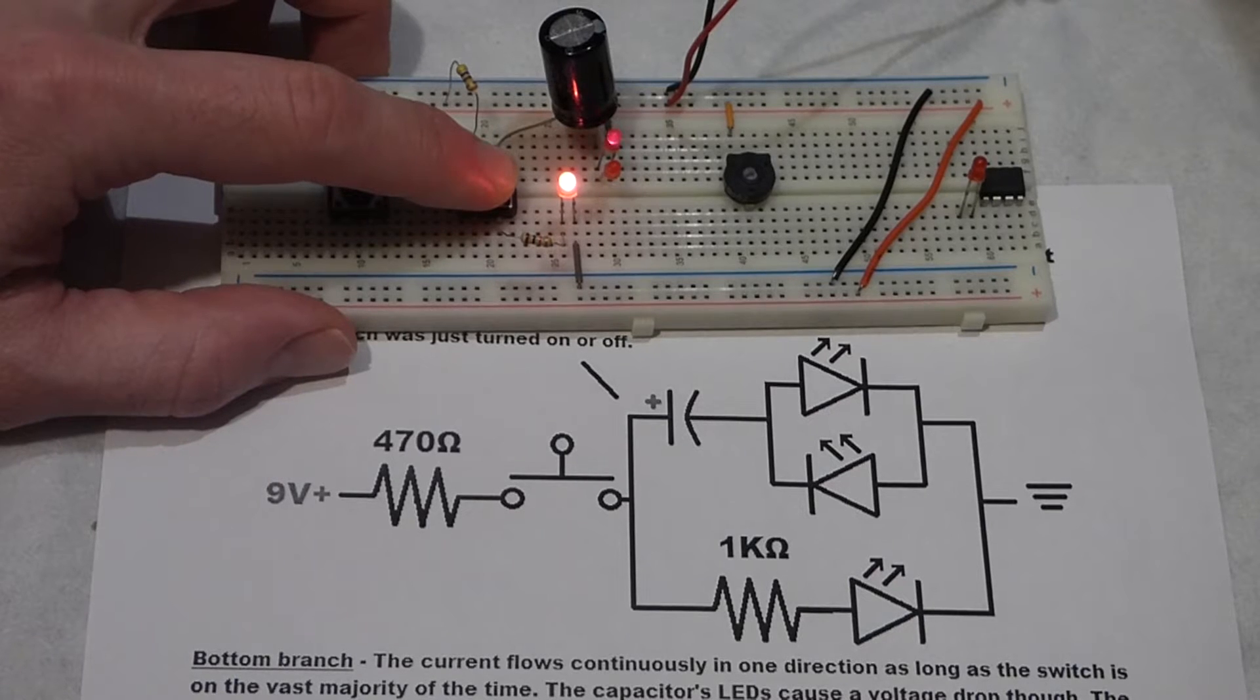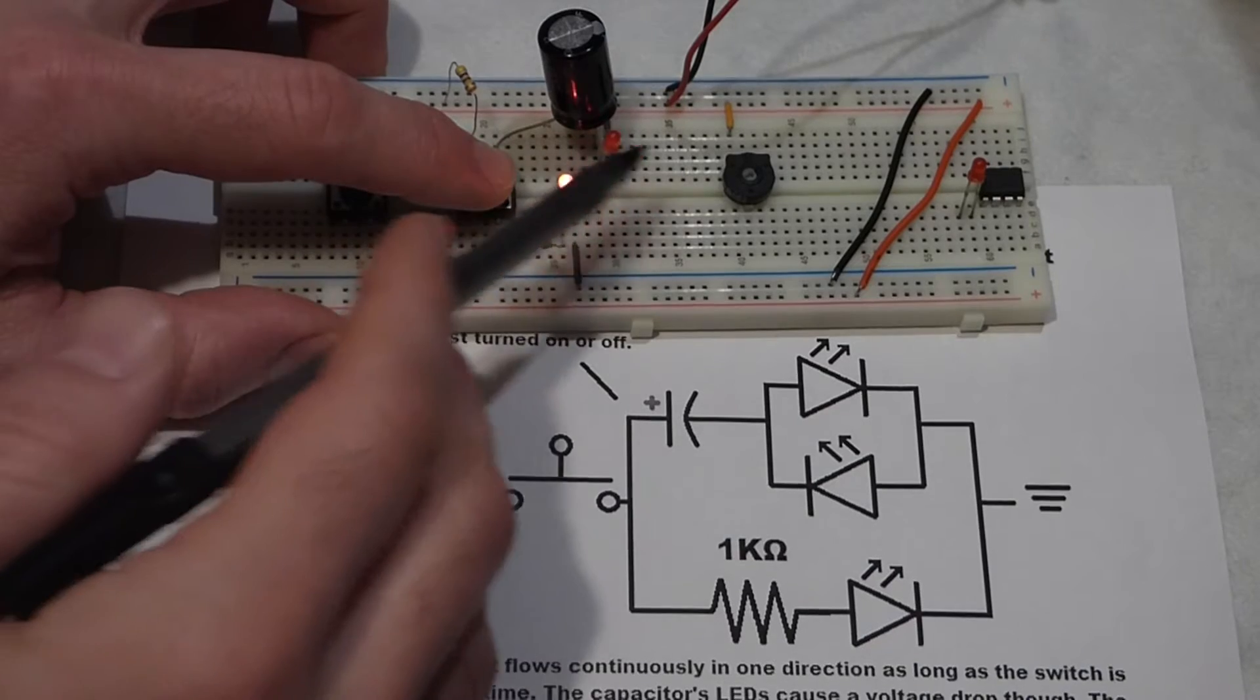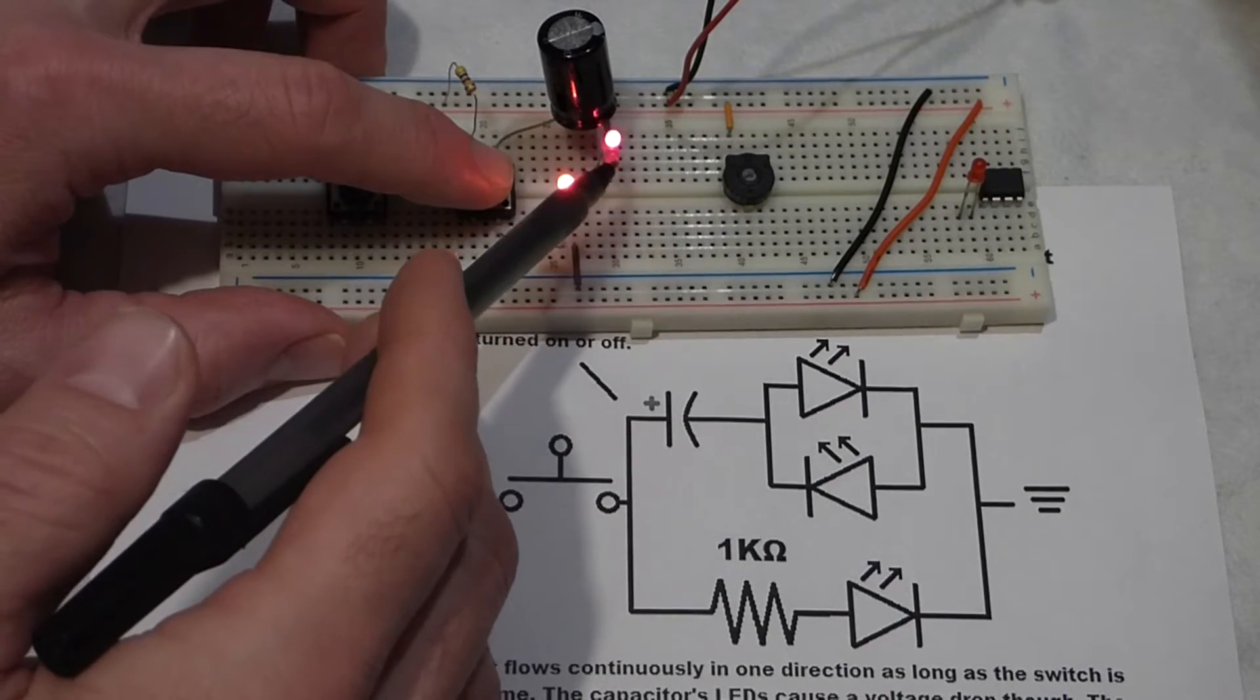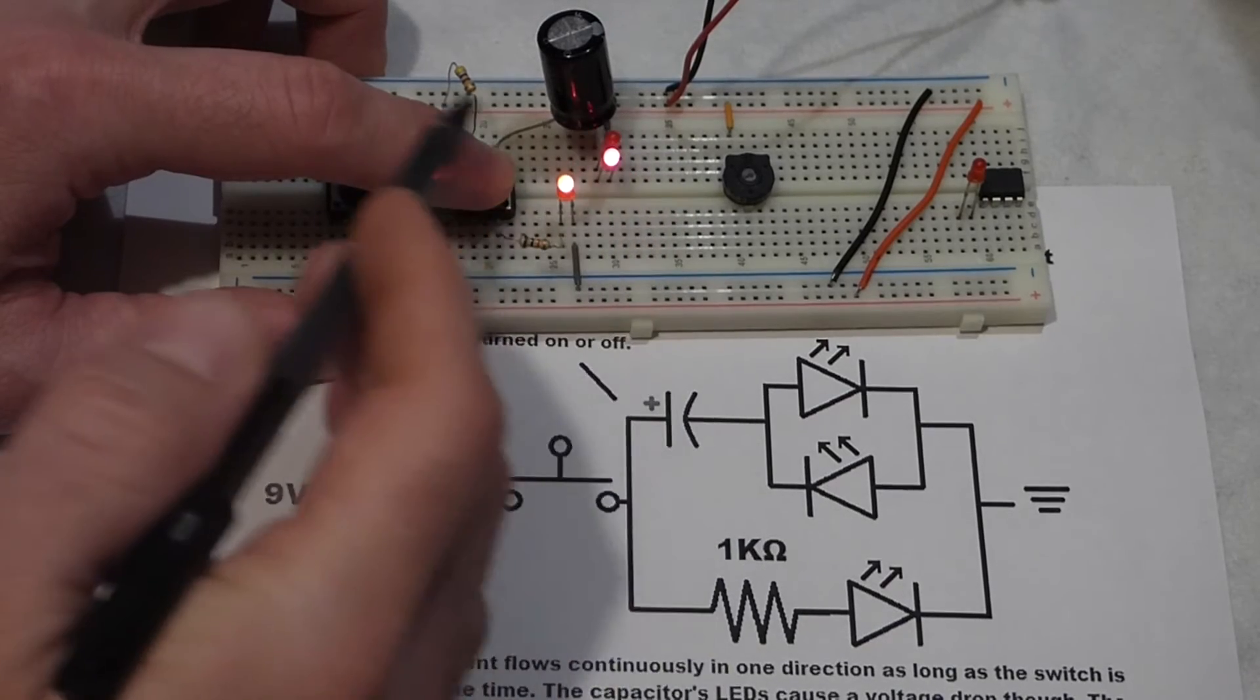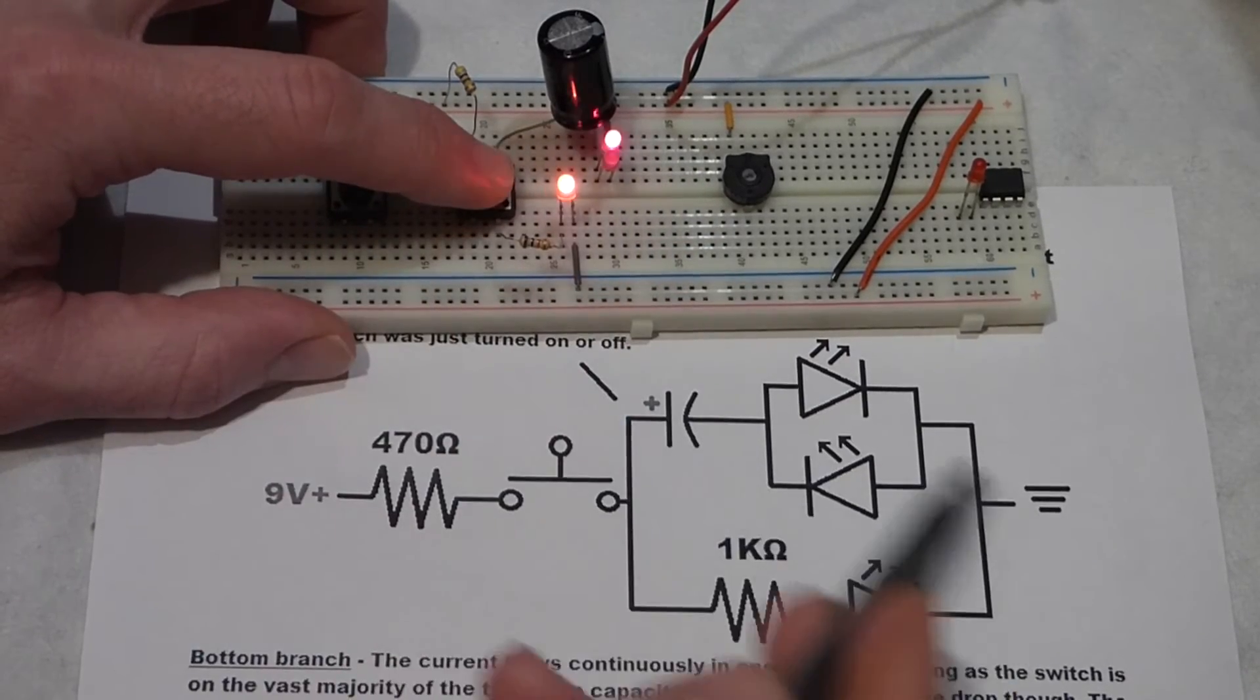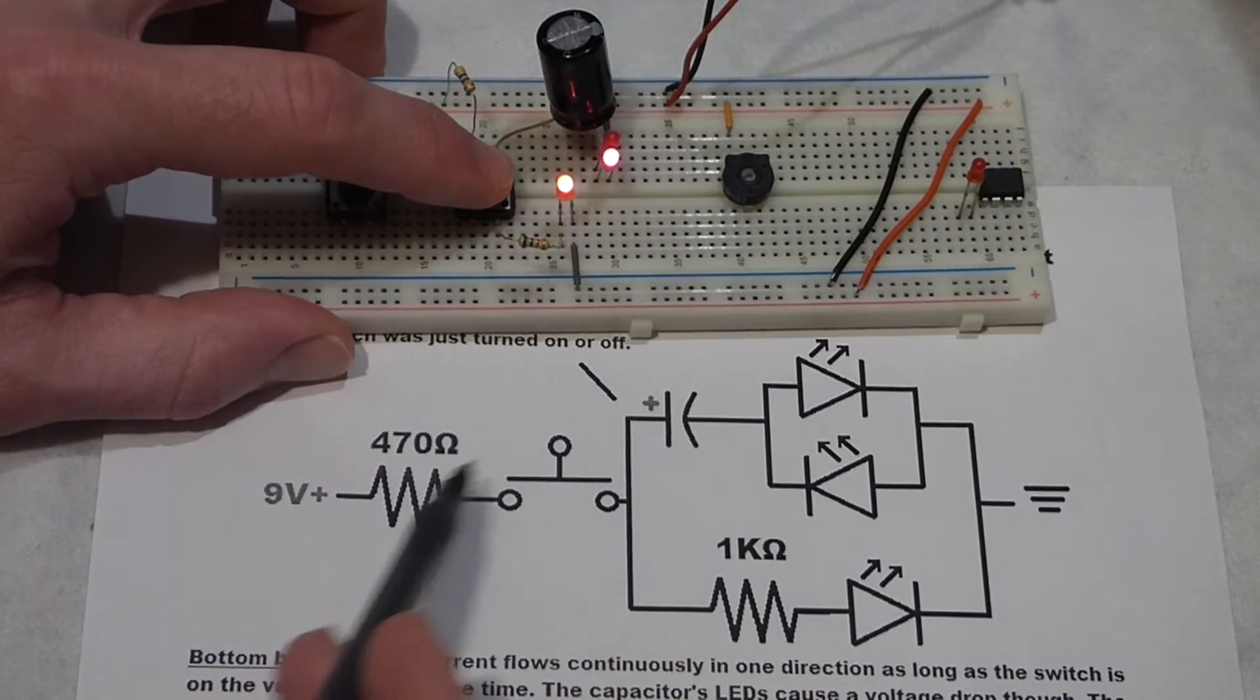But now, if I turn the switch on and off, you can see that one of these LEDs is turned backwards from the other, so that current can flow both ways. In this part of the circuit, we have current that's alternating as I hit the switches.